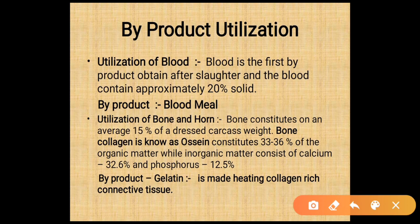The first byproduct is utilization of blood. Blood is the first product obtained after slaughter and contains approximately 20% solids. The byproduct obtained from blood is blood meal.